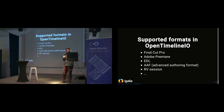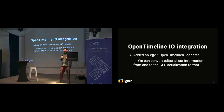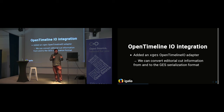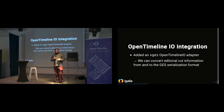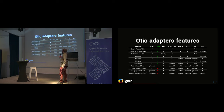If we integrate OpenTimelineIO with GStreamer, we basically become compatible with all those tools. GStreamer Editing Services has its own serialization format called XGS, and we implemented an adapter — the piece that converts from the OpenTimelineIO internal representation to the other formats and the other way around. So now with OpenTimelineIO we can convert from XGS to any supported format. We can see a list of features supported by the different adapters, and in GStreamer we basically have most of them.